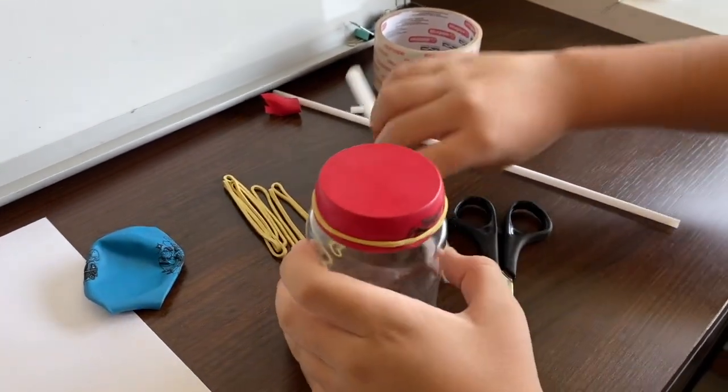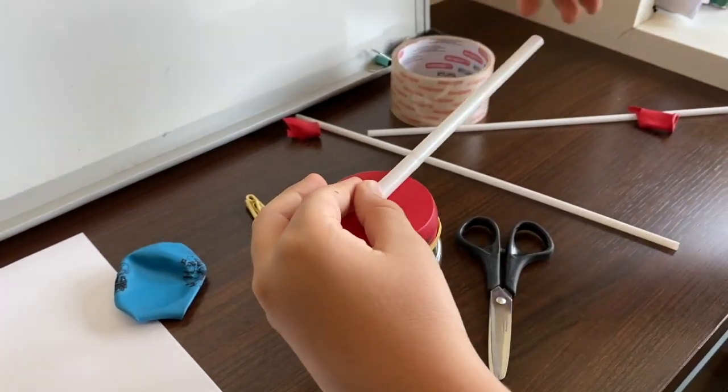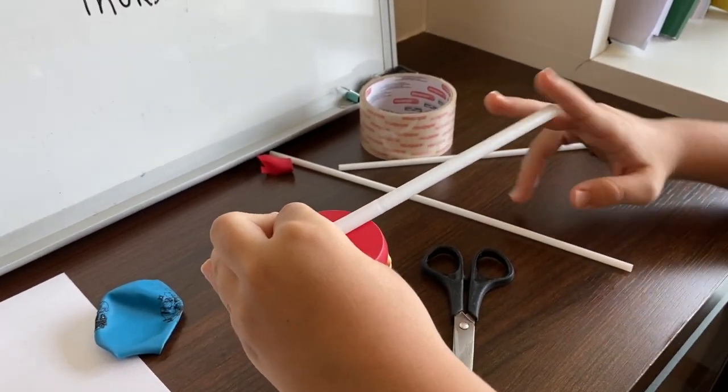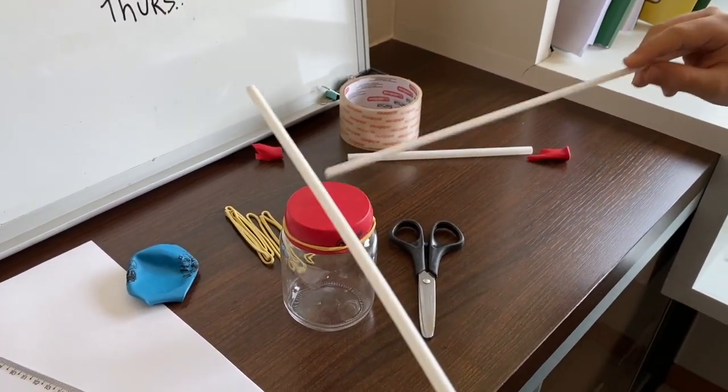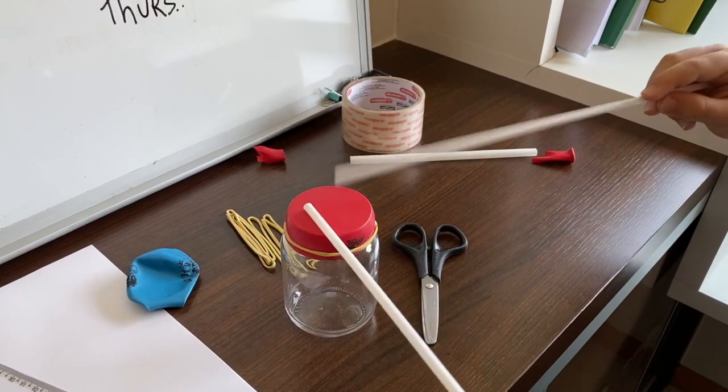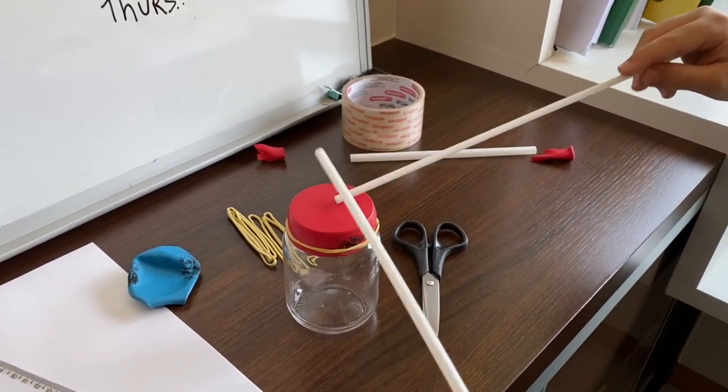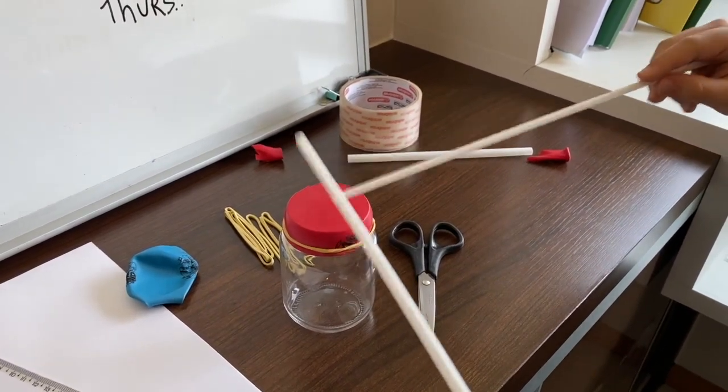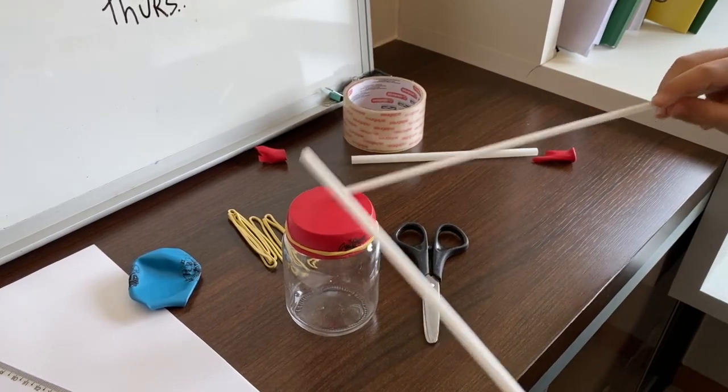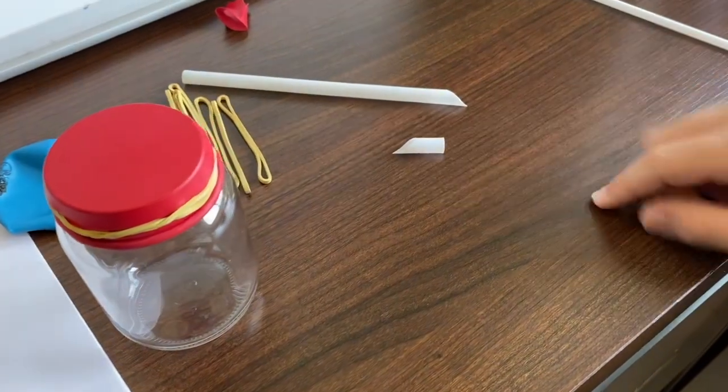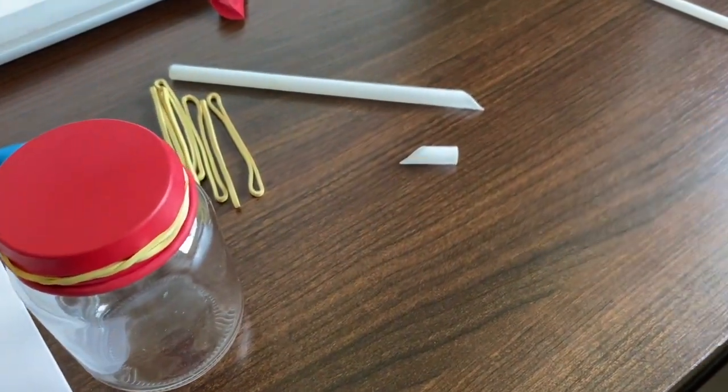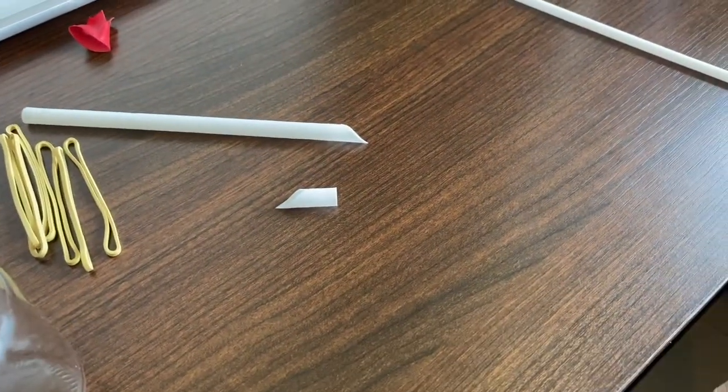Now on the next step we're going to glue this and cut on this part. We cut the straw like this so it can measure easily on the ruler.